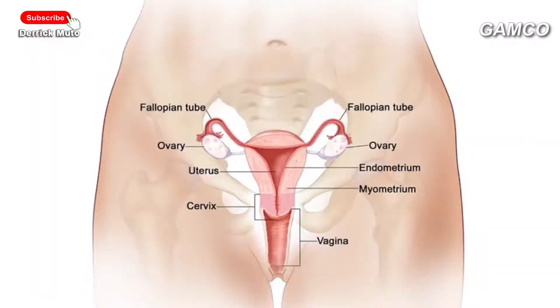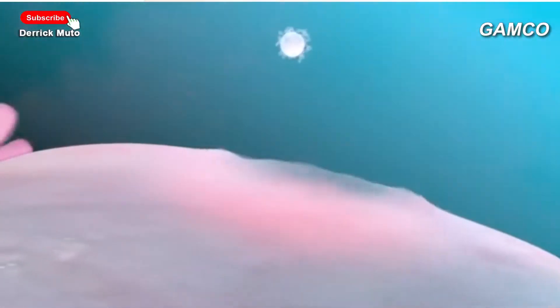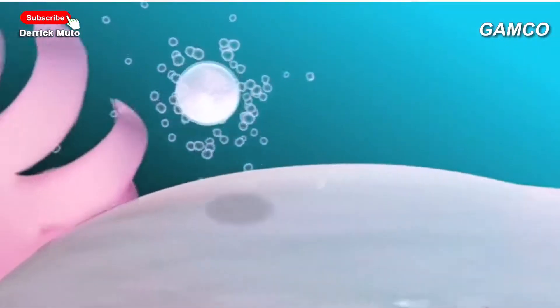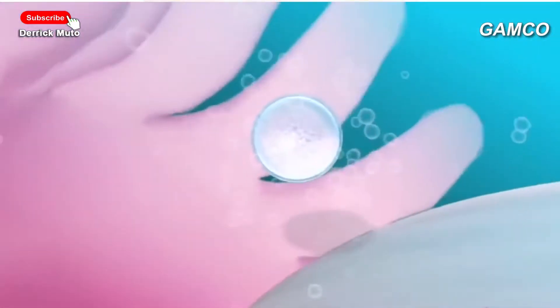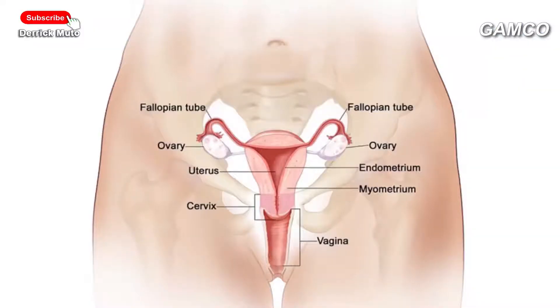The female reproductive system is made up of the following parts. Number one: ovaries. These are two and lie suspended in the abdominal cavity by ovarian ligaments. Their function is to produce ova and produce female hormones such as estrogen and progesterone.